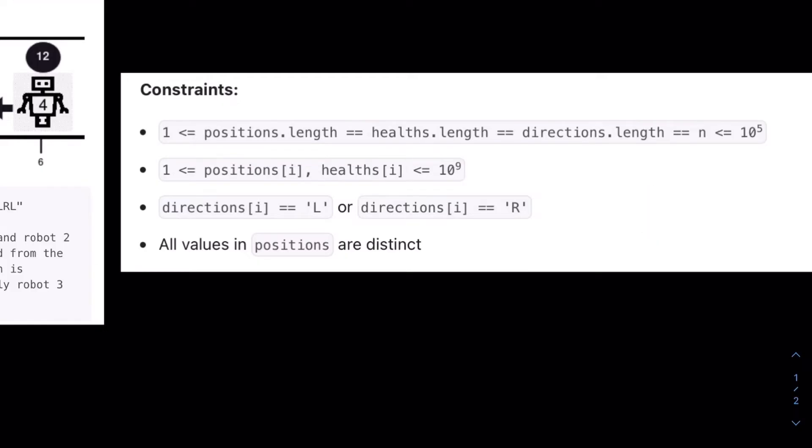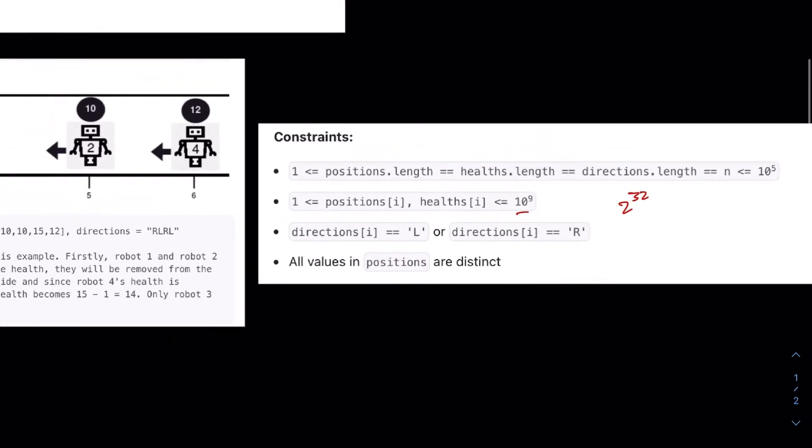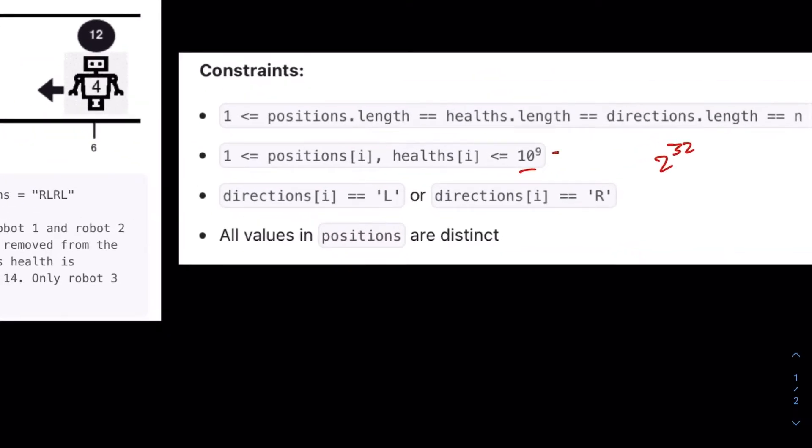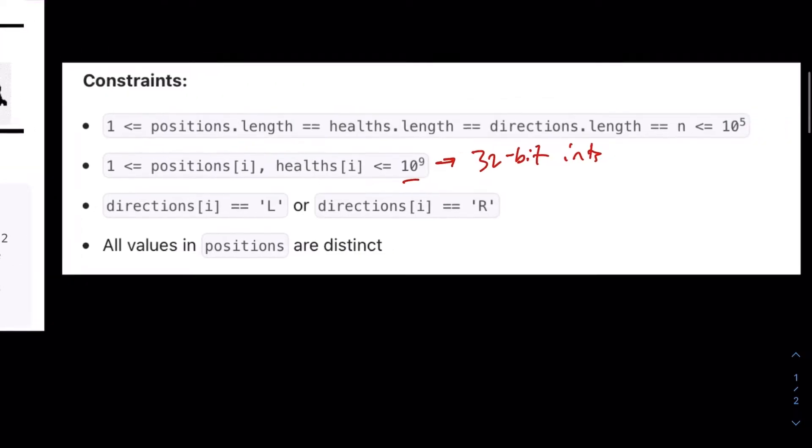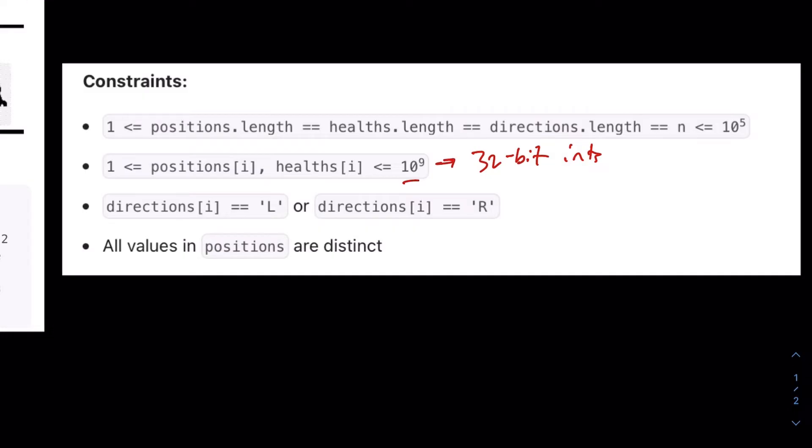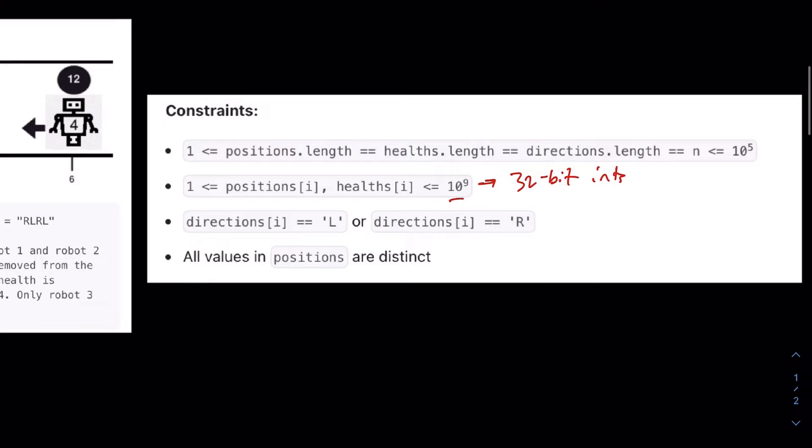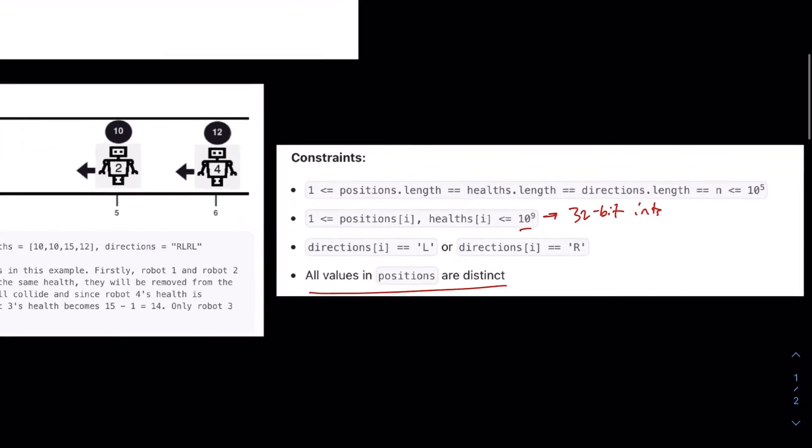Anything slower than O of N log N would be too slow. And then same thing here, the numbers go up to 10 to the 9, which is less than 2 to the 32, so we should be okay to just use 32-bit integers. Directions, either L or R, pretty straightforward. All values in positions are distinct. This actually makes the problem a little bit easier.